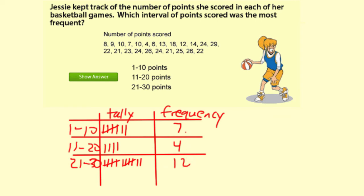Now what I like to do is I also like to do the total of this to make sure I didn't miss any numbers. So 7 plus 4 is 11, plus 12 is 23. So there should be 23 of these values here. I'm just going to go through and count them again.